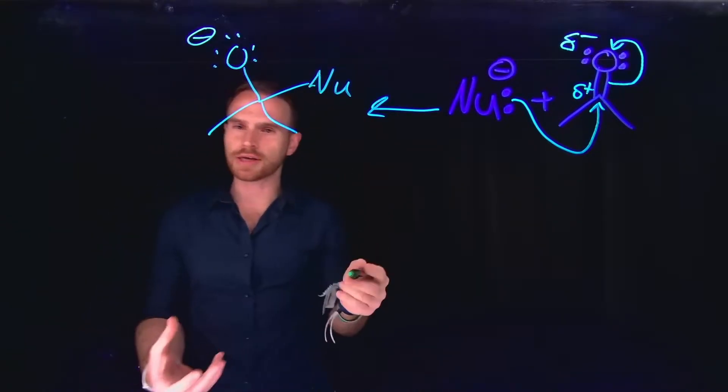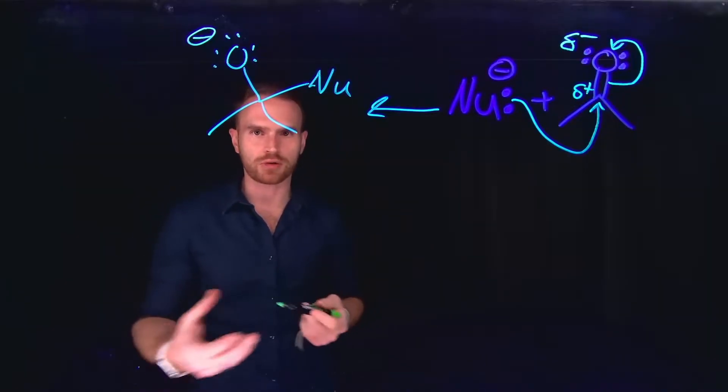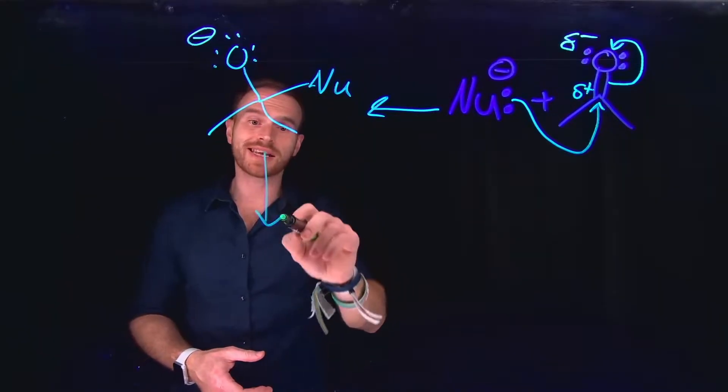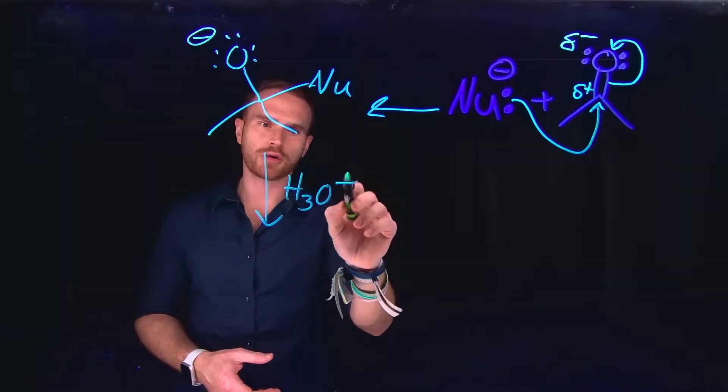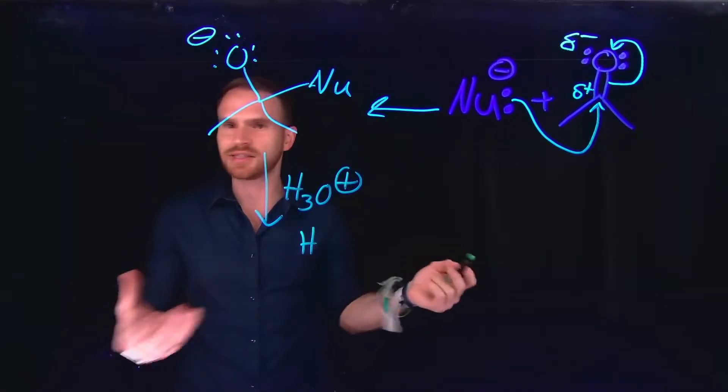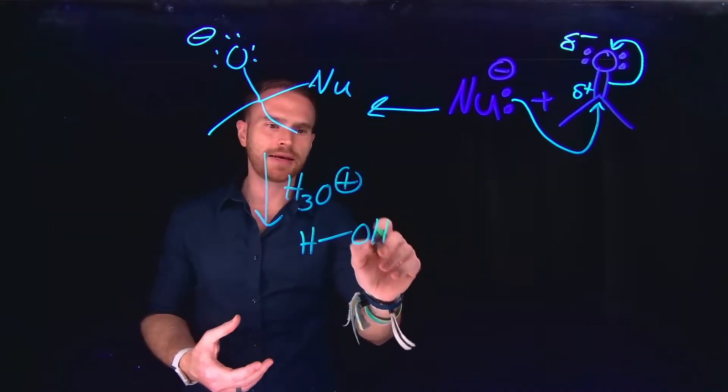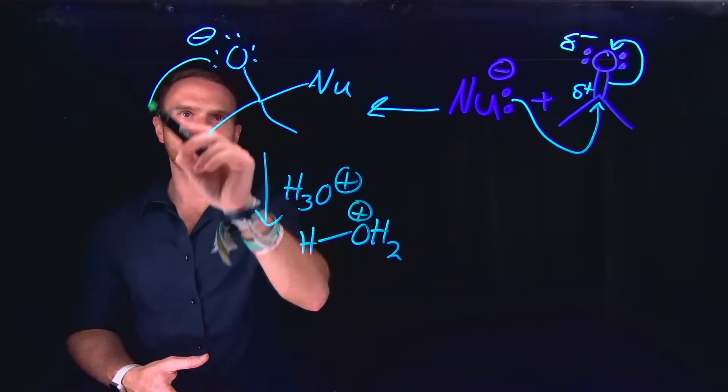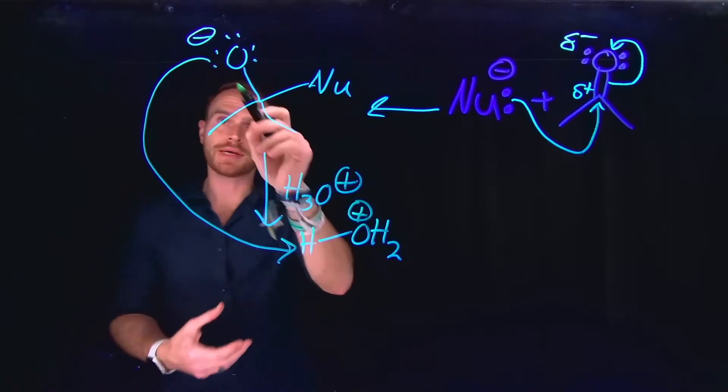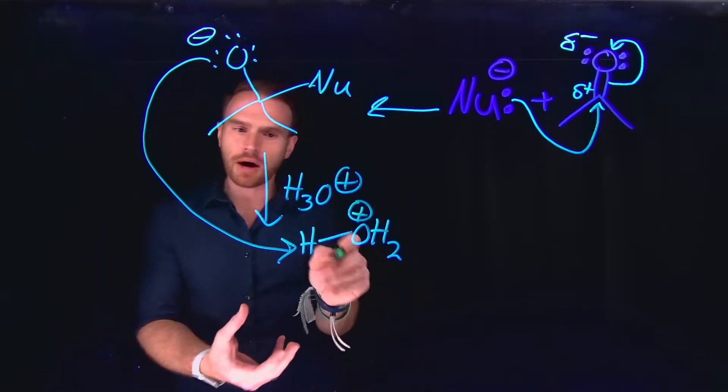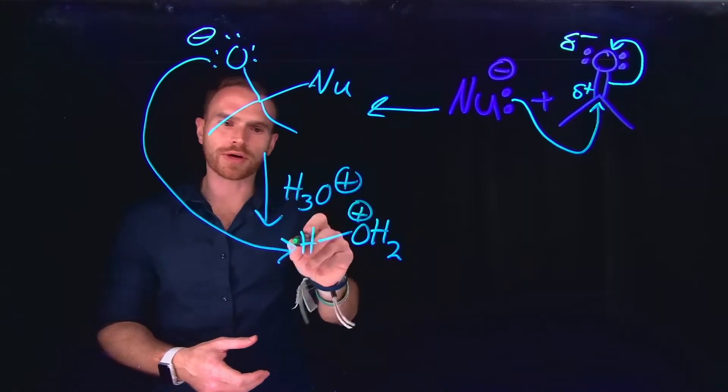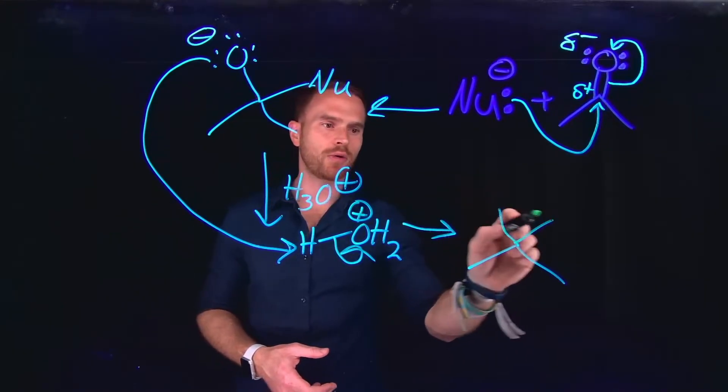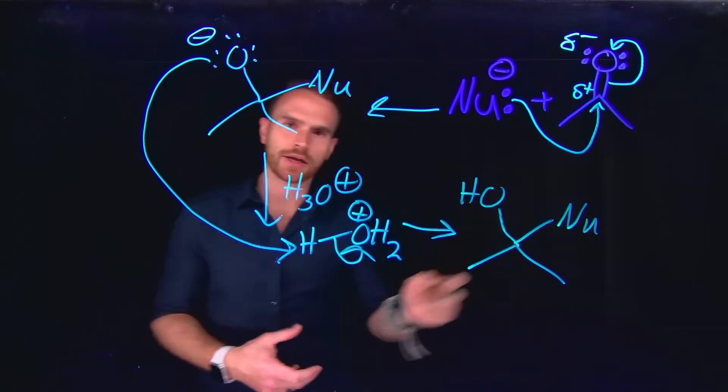So now that we have added our nucleophile, what will typically then happen is some sort of proton transfer. So even though we've used basic conditions to perform this reaction, we will use an acidic workup in order to turn this molecule into an alcohol. So remember that H3O plus is just meant to generate, just meant to depict any sort of acid that you would use for your workup. And from here, the negatively charged oxygen will be attracted to this partially positive proton in an acid. So therefore, we will get another attack here, or deprotonation of the acid. And this will generate our final product, which is now going to be a tertiary alcohol, where we have also added a nucleophile.